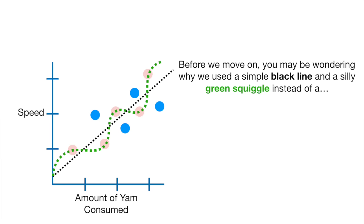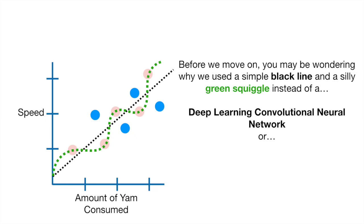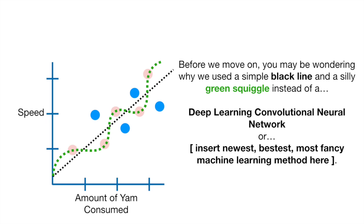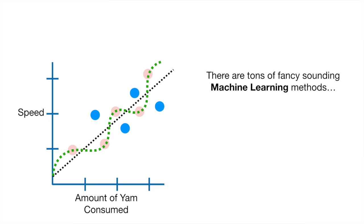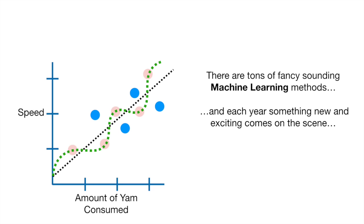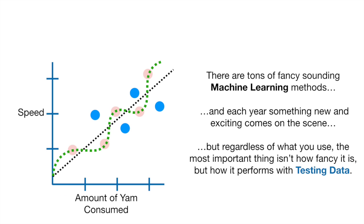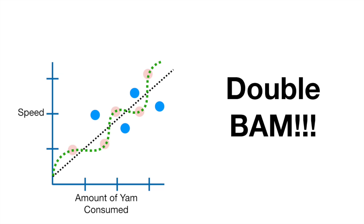You may be wondering why we used a simple black line and a silly green squiggle instead of a Deep Learning Convolutional Neural Network — or insert newest, bestest, most fancy machine learning method here. There are tons of fancy-sounding machine learning methods, and each year something new and exciting comes on the scene. But regardless of what you use, the most important thing isn't how fancy it is, but how it performs with testing data. Double bam!